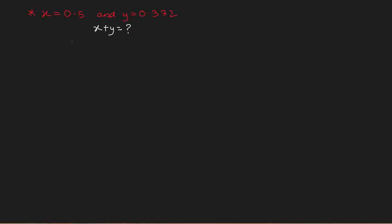Hey guys, so in this tutorial we'll be looking into the IEEE floating point addition, subtraction, and multiplication. We'll be looking at an example of addition and then another example of multiplication, because the subtraction part is basically the same thing as addition — if you can do addition, you can do subtraction too. Here's one example for addition.